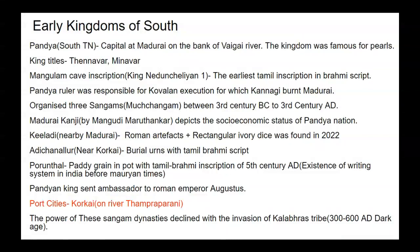At Kiladi, a location nearby Madurai, Roman artifacts and a rectangular structure were found in 2022 excavations. At Adi Channalu near Korkai, burial urns with Tamil Brahmi script were found. At Porunthal, paddy grain imprint with Tamil Brahmi inscription was found, dating to the 5th century BC. Many scholars suggest there was a writing system in India before Mauryan times.